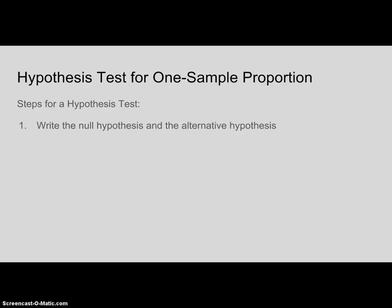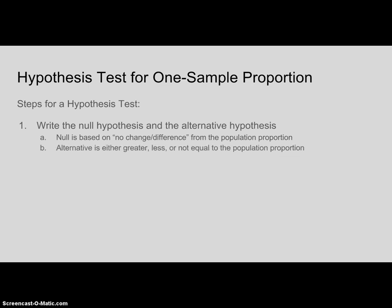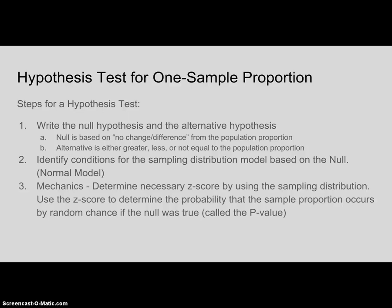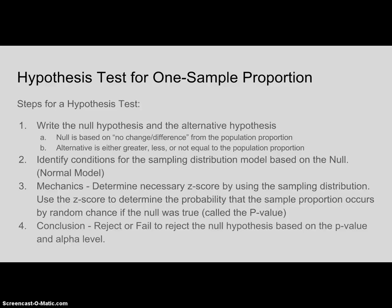These are the steps for a hypothesis test. First, we need to write our hypothesis, which includes a null and alternative. The null means there's no change — it is the population proportion. The alternative is basically what we're trying to prove. Second, we identify our conditions for a sampling distribution. Third, we do our mechanics: find our z-score and the probability that the sample happens given that the null is true. Fourth, we make our conclusion based on what we call the p-value.